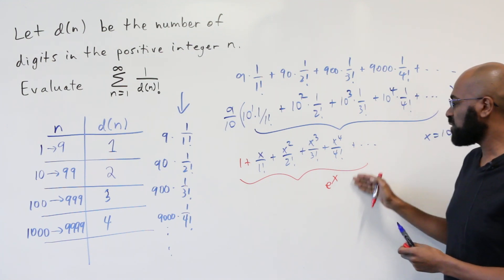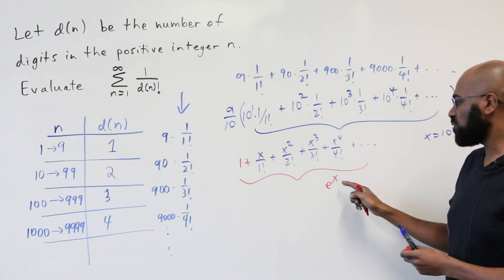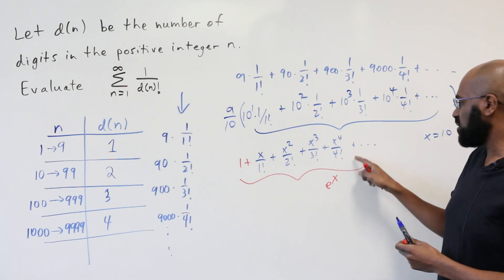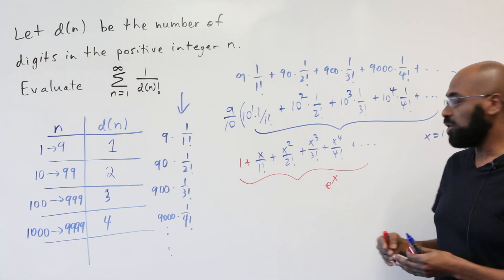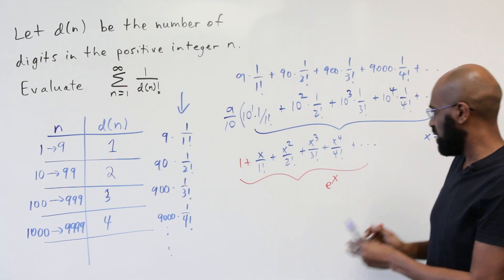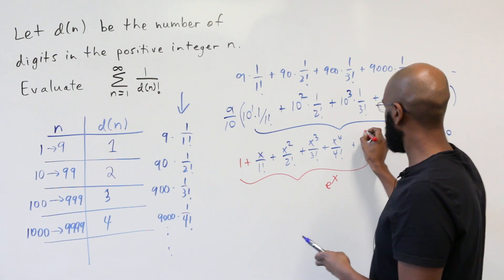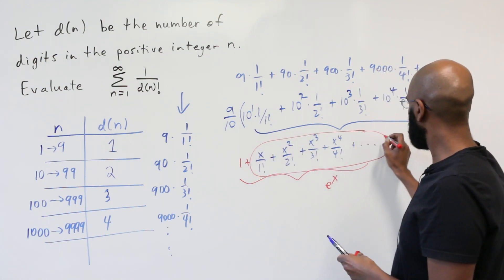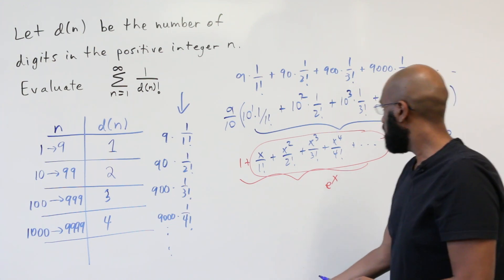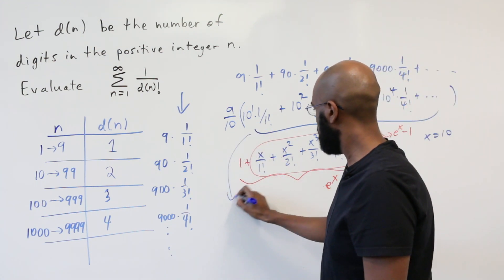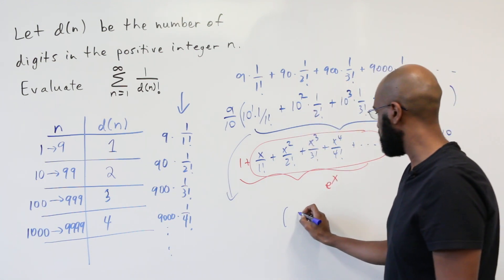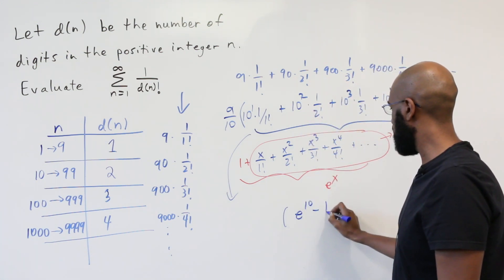and this works for any value of x, because the radius of convergence of e to the x, the power series for e to the x, is the entire real line. So, because of this, this expression right over here must be e to the x minus 1. And for x equals 10, that gives us that the expression in the parentheses is e to the 10 minus 1.